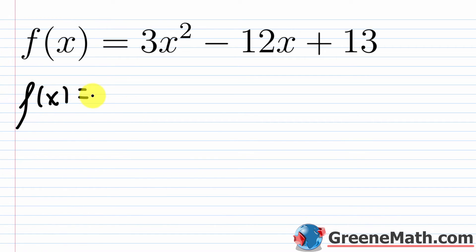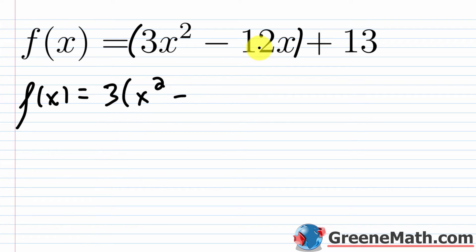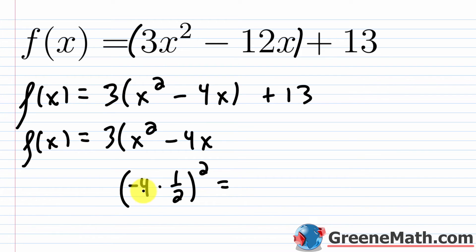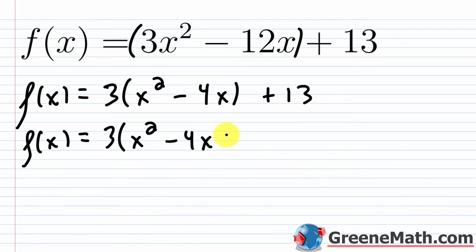Let's do one example. To complete the square on 3x squared minus 12x plus 13, first group the variable terms and pull out the 3: f of x equals 3 times the quantity x squared minus 4x. Now cut the coefficient negative 4 in half — negative 4 times one half is negative 2 — then square it: negative 2 squared equals 4. So add 4 and immediately subtract 4 inside the parentheses; that's just zero, so nothing illegal.